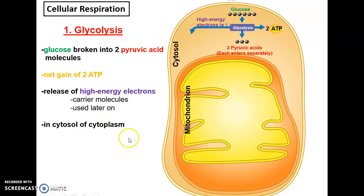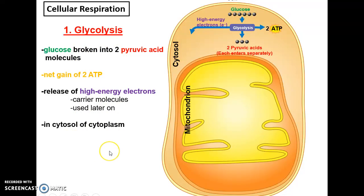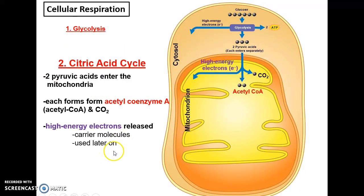Cellular respiration occurs in three main processes. The first is glycolysis, which happens in the cytoplasm, where glucose is broken into pyruvic acid molecules. We end up with a net gain of 2 ATP and some high-energy electrons carried on a molecule to be used later. The pyruvic acid then enters the mitochondria.